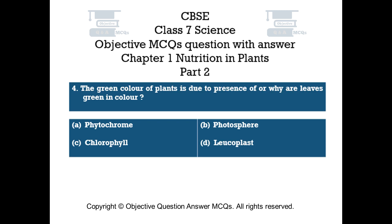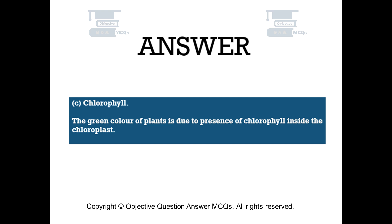Question number 4: The green color of plants is due to presence of — or, why are leaves green in color? Option A: phytochrome. Option B: photosphere. Option C: chlorophyll. Option D: leucoplast. The right answer is option C — chlorophyll. The green color of plants is due to the presence of chlorophyll inside the chloroplast.